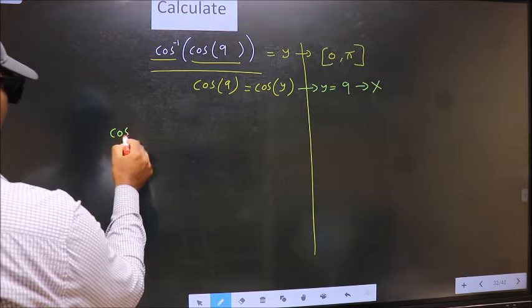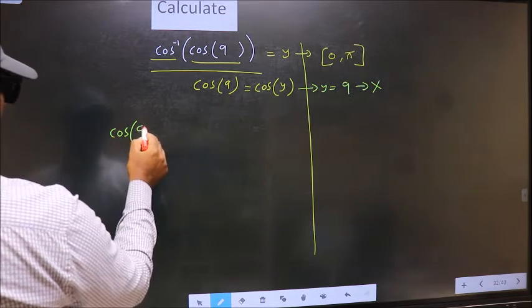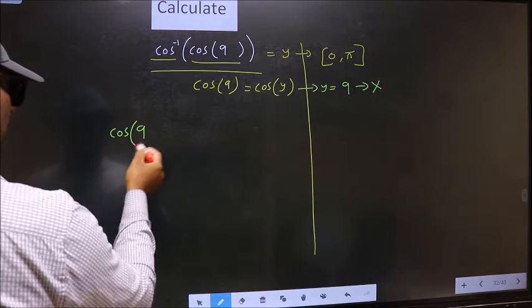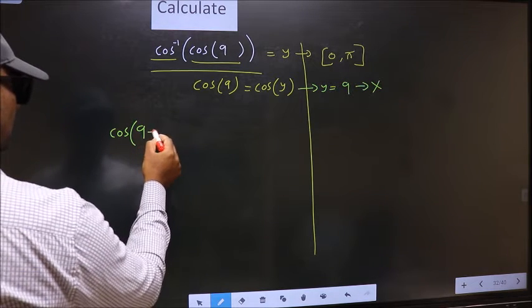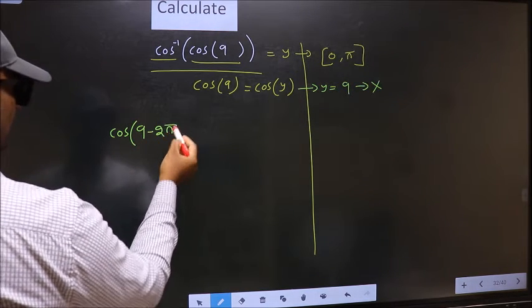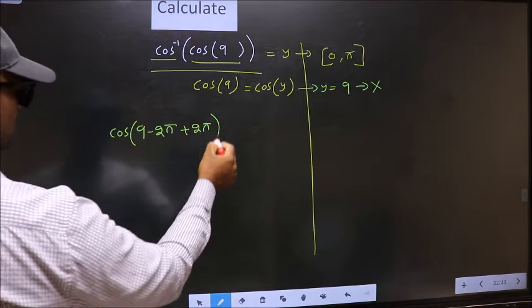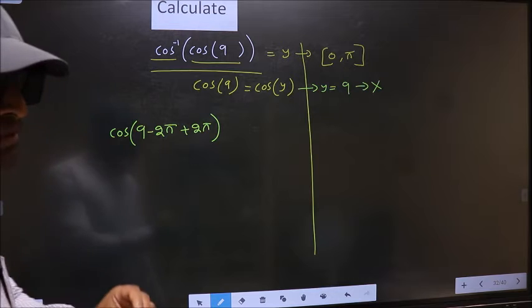Cos 9 exceeds that interval. So we should decrease it. To decrease, I subtract 2 pi. Now, whatever we are subtracting, we should also add the same thing.